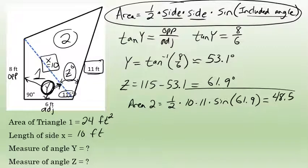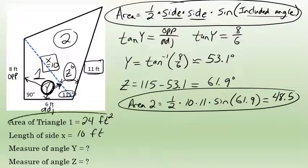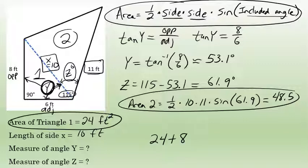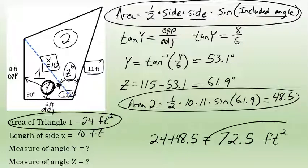Now that I know the area of triangle 2 and the area of triangle 1, the area of the entire quadrilateral is the sum of the areas of the two triangles. So 24 plus 48.5 gives me the area of the entire quadrilateral, which is approximately 72.5 square feet.